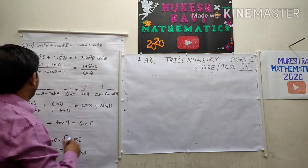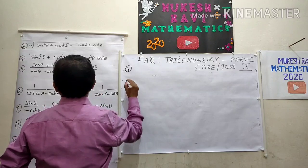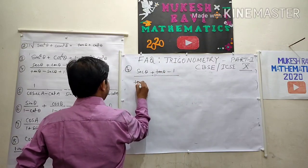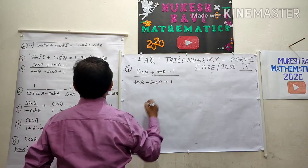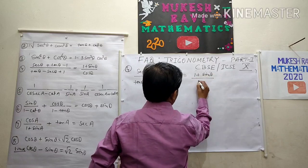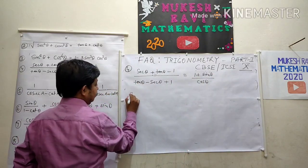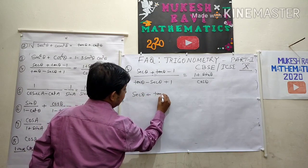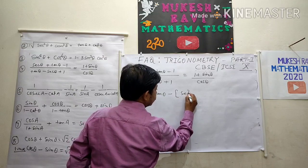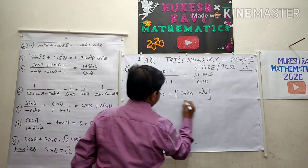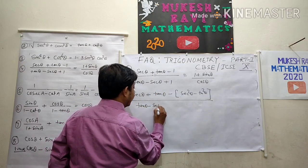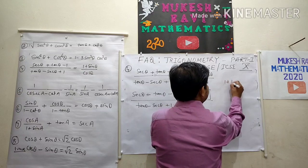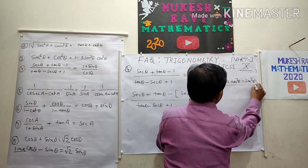Question number 4 — a very good question. (sec θ + tan θ − 1) divided by (tan θ − sec θ + 1) is equal to (1 + sin θ)/cos θ. Now sec θ + tan θ − 1: the 1 here can be replaced using the identity 1 + tan²θ = sec²θ, so 1 = sec²θ − tan²θ.